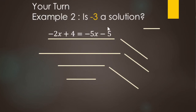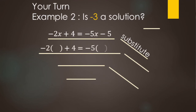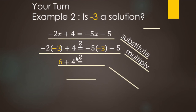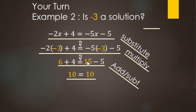Now we're checking to see if negative three is a solution. We substitute negative three in for the X's and see if it makes a true statement. Negative three goes in for X in both places. Order of operations: negative two times negative three — negative times negative is positive — gives six, plus four. And negative five times negative three gives 15, minus five. Addition/subtraction: six plus four makes 10, and 15 minus five also makes 10. Ten equals ten — that's a true statement. So negative three is a solution.